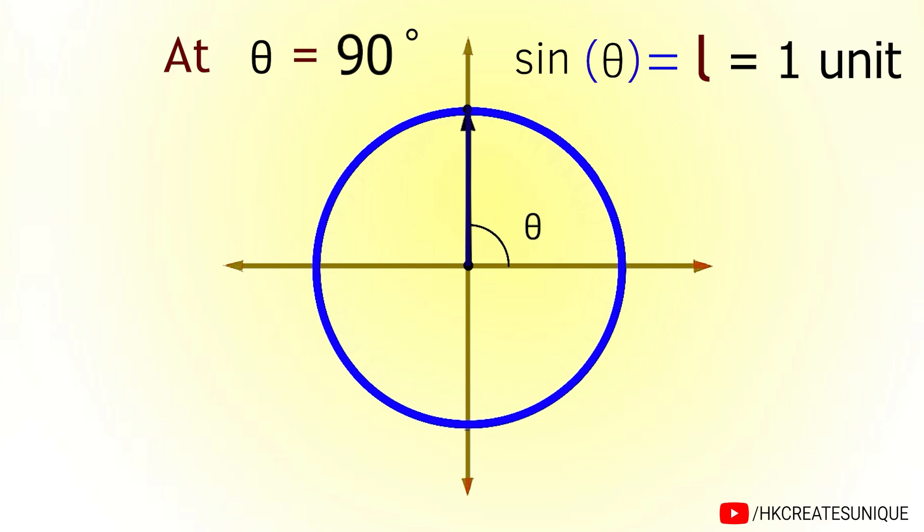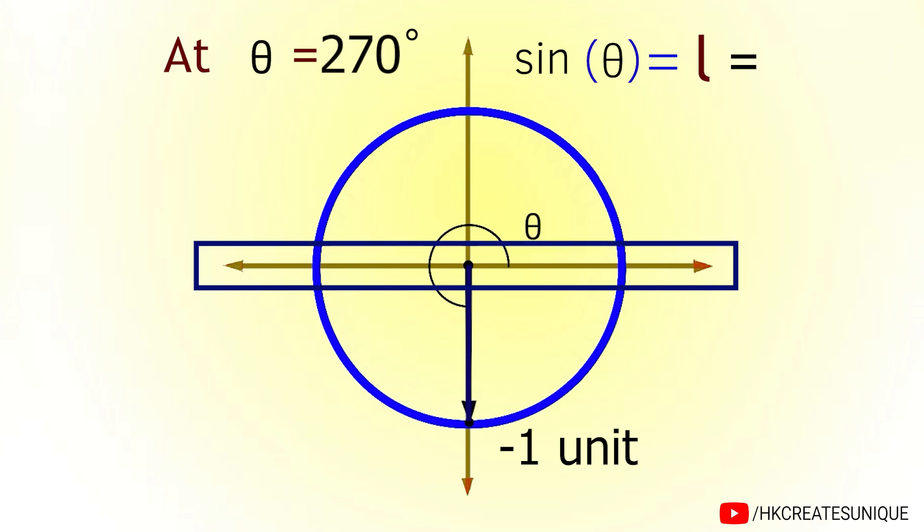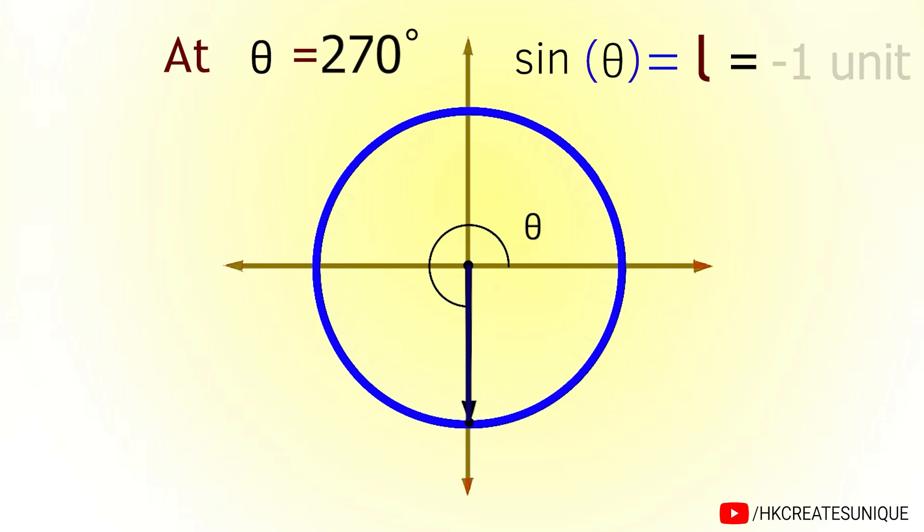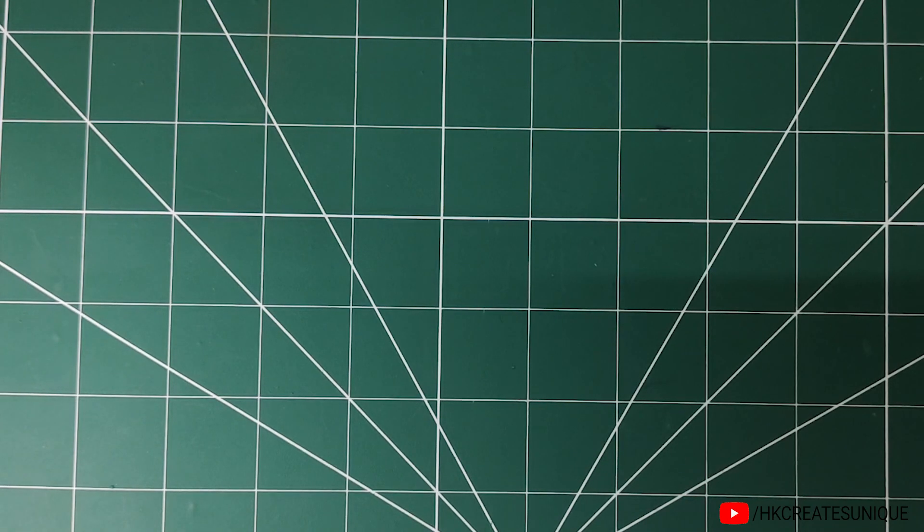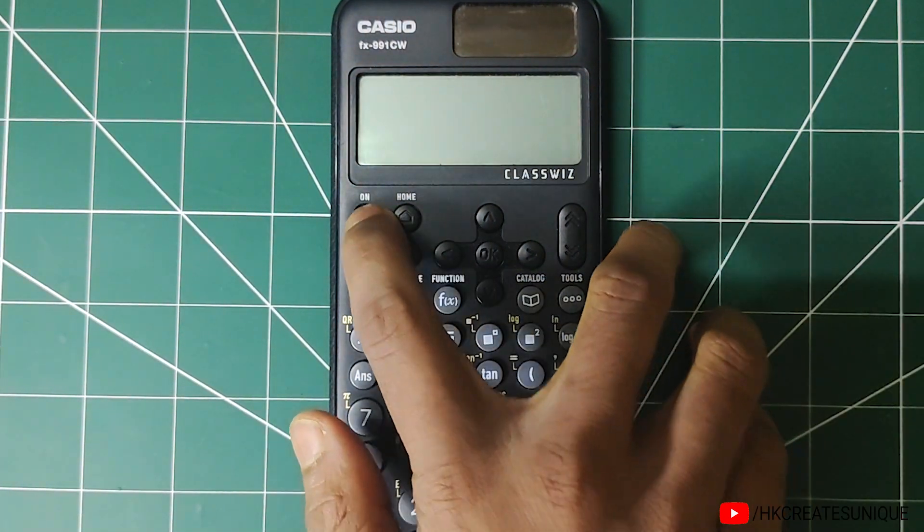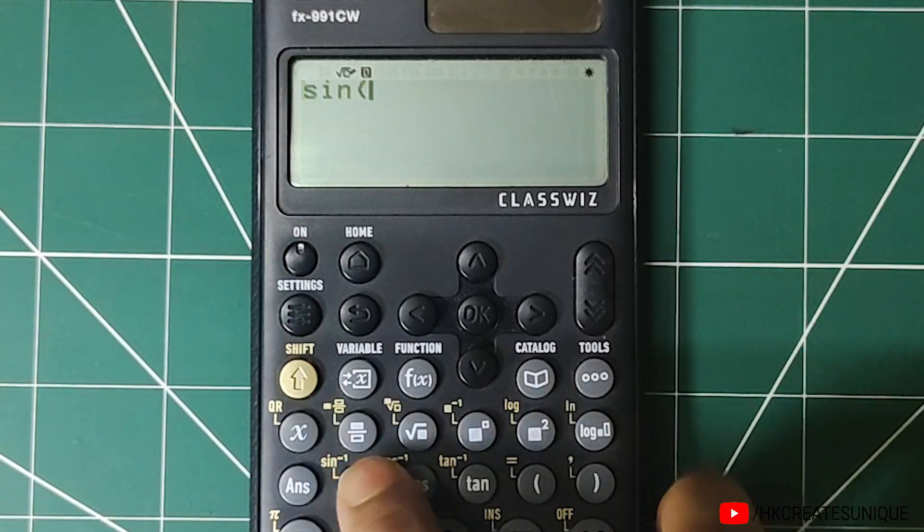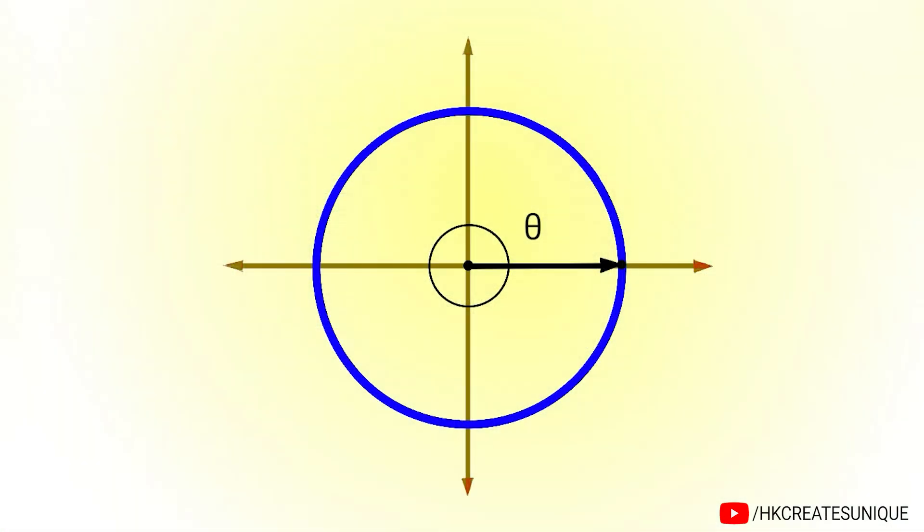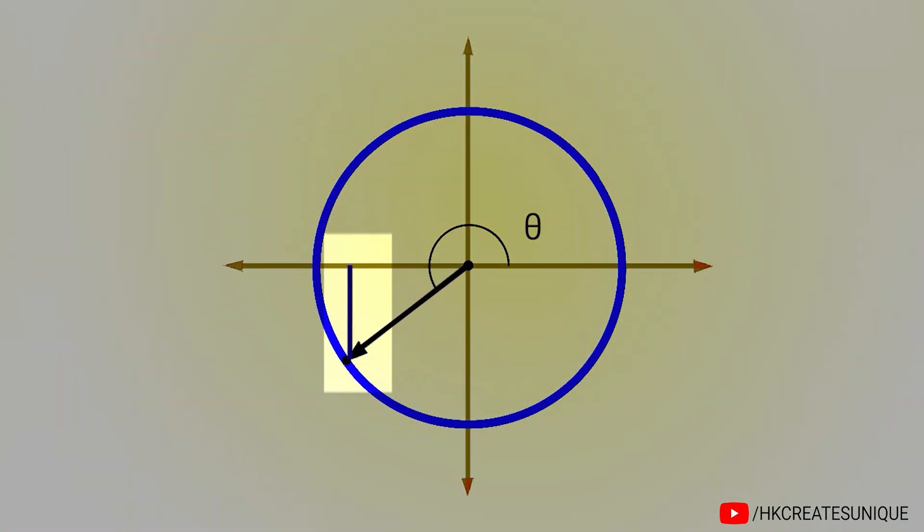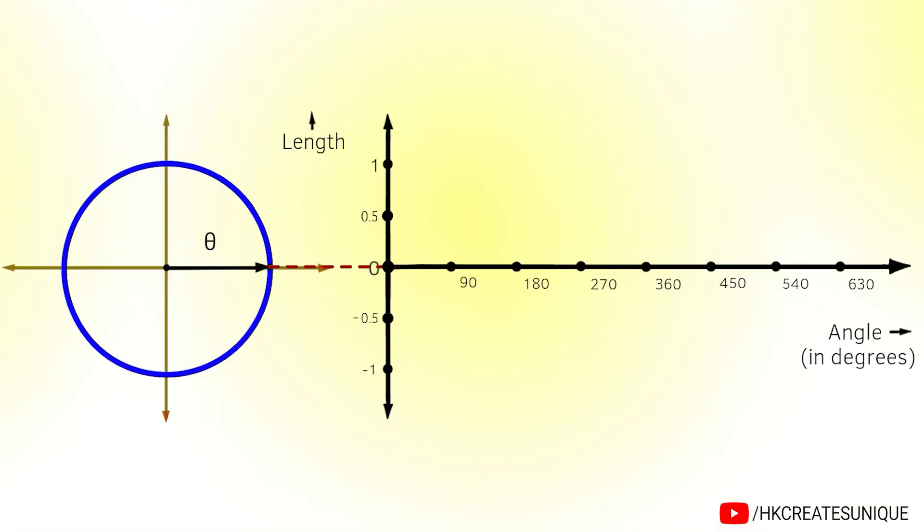By further increasing theta, at theta equals 180 degrees, length is 0 unit. And at theta equals 270 degrees, length is minus 1 unit. It is negative because the length is below horizontal axis. And at theta equals 360 degrees, length is 0 unit. You can use a scientific calculator to find sine of any angle, such as sine of 26 degrees is 0.4383 and so on. If we plot length of this vertical line with respect to angle, we get this beautiful sine wave.